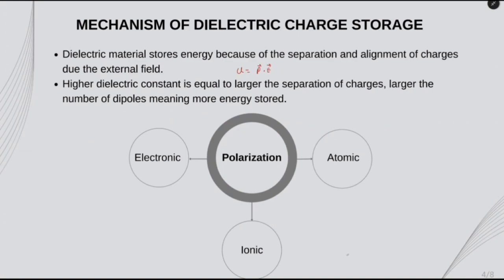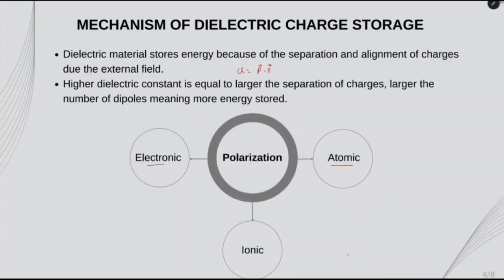In types of polarization: in electronic polarization, the center of negative charge clouds shifts according to the electric field. In atomic polarization, the atoms shift in the electric field according to their electronegativity. In ionic type, the shifting of ions in an ionic bond causes very high dielectric constants.